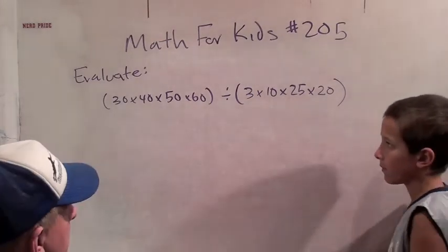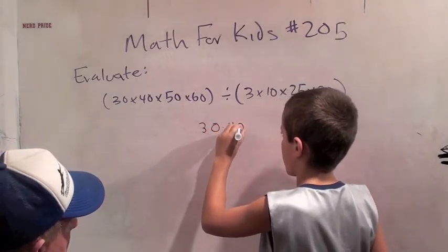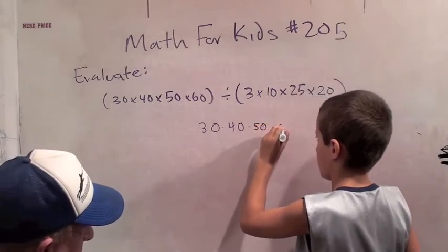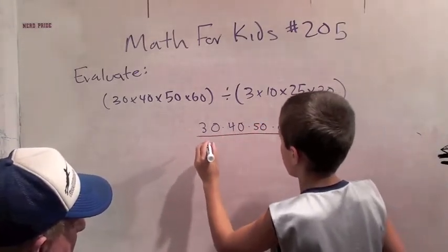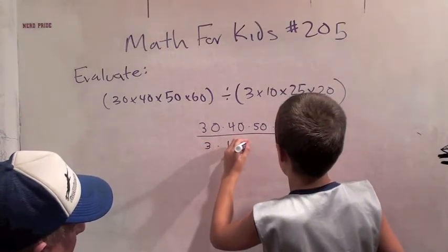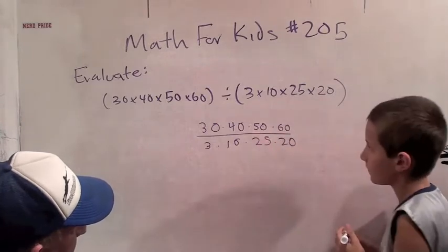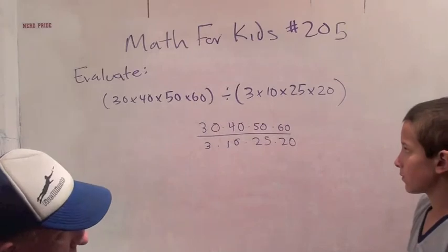We can write it as 30 times 40 times 50 times 60 over 3 times 10 times 25 times 20. That's a better way to write it. So this is a little bit easier to think about how to deal with this. And now what can you do?